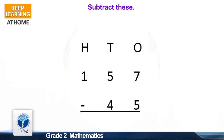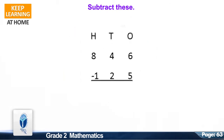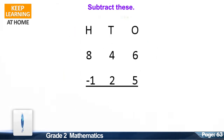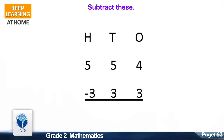Now we move to the next resource pack concept: Subtract these. Let's start. The first question is 157 minus 45. The correct answer is 112. The next question is 846 minus 125.